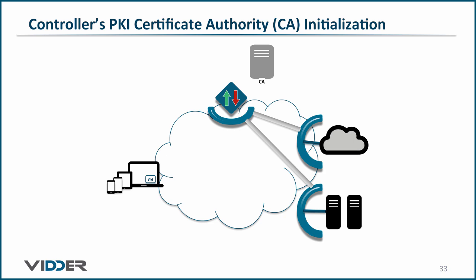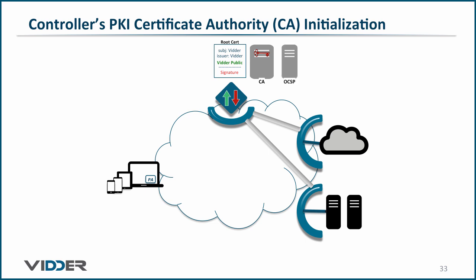First, we bring up the Certificate Authority application. The CA will generate an asymmetric key pair and create an X.509 certificate, with the subject name and issuer name being the same. This is the definition of a self-signed CA, and it will only exist on the root CA. Next, the public key is put on the certificate. A hash is taken of the whole certificate, and the hash is encrypted with the private key of the CA. The encrypted hash is referred to as a signature. The final steps involve turning on an OCSP responder and having it get the Certificate Revocation List from the Certificate Authority. Now our CA is set up.